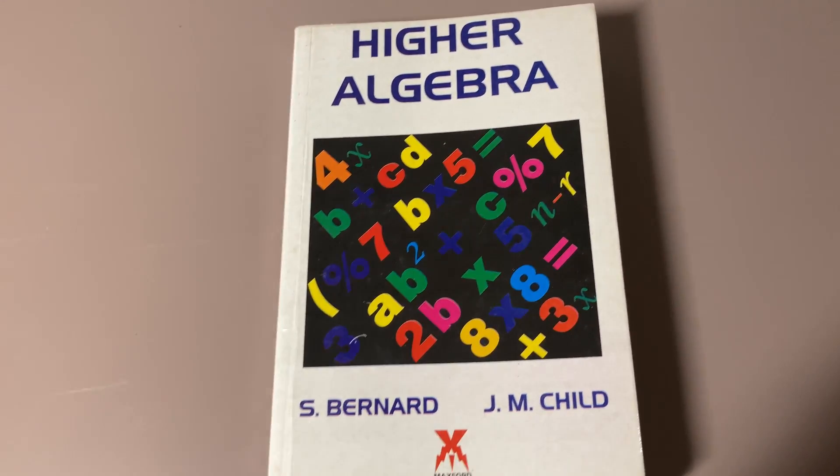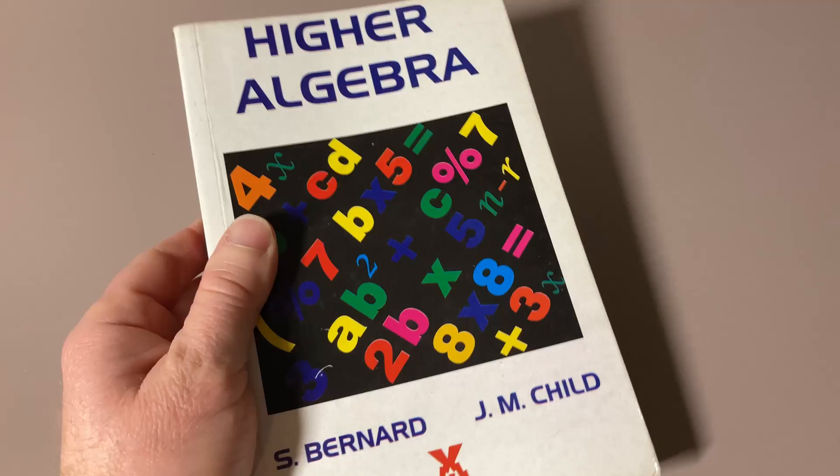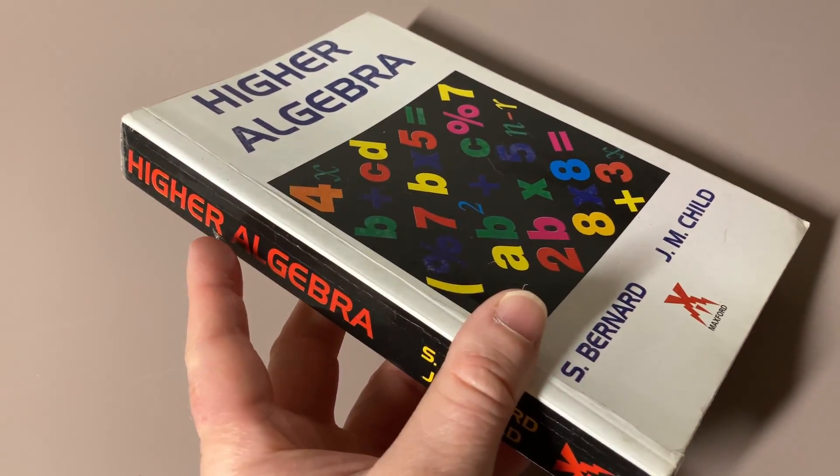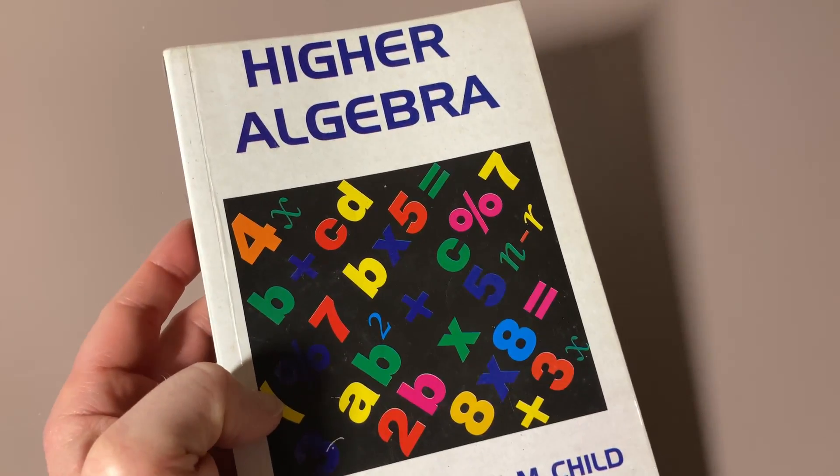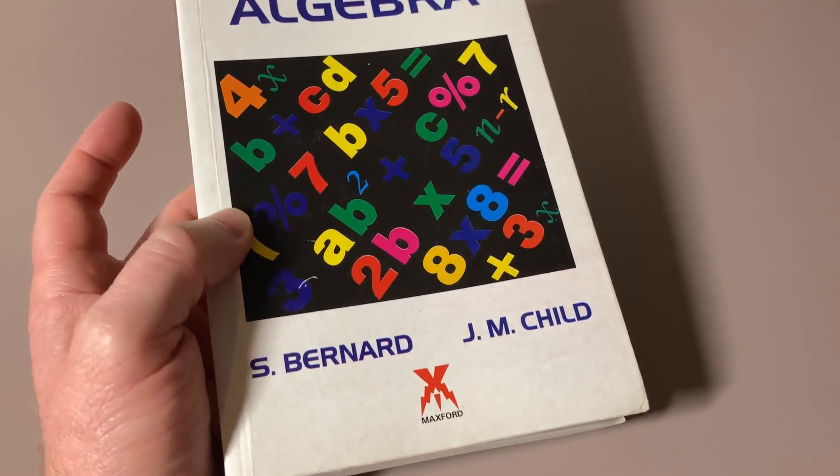Collecting things can be really fun, and certain things are harder to get. This is an example of a book that is pretty hard to get if you're in the U.S. It's called Higher Algebra, and it's by Bernard and Child.